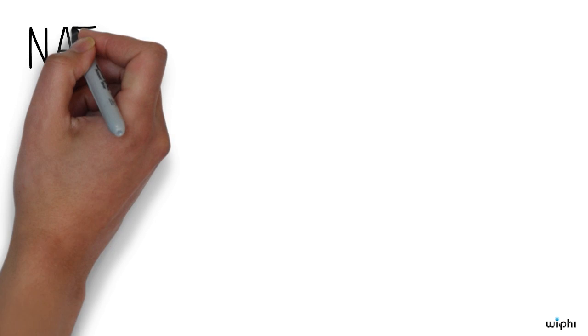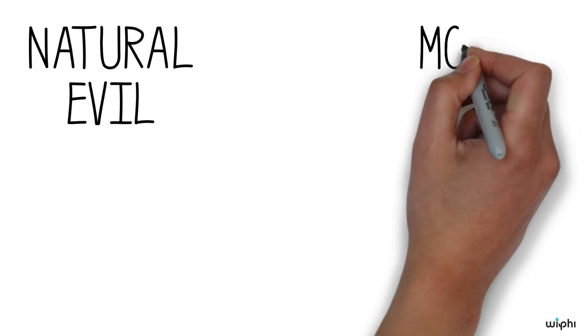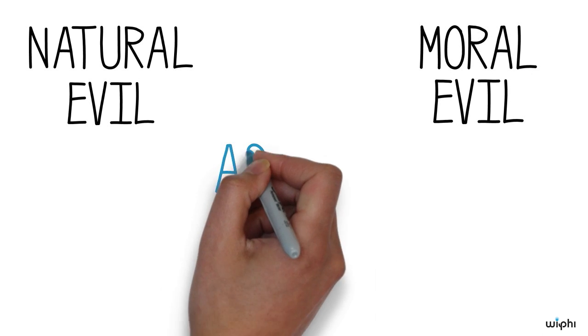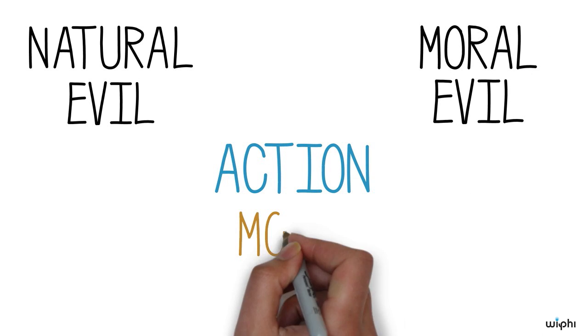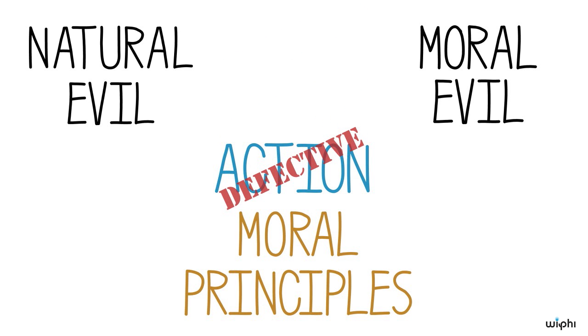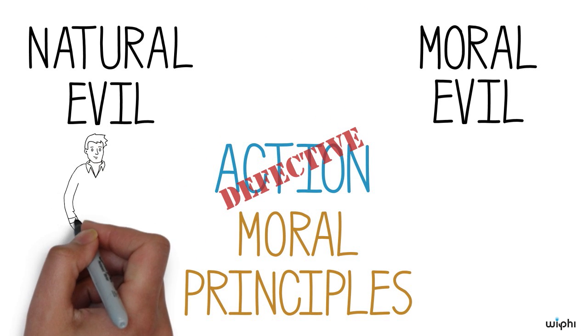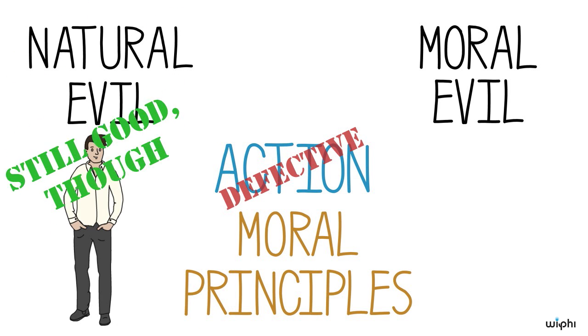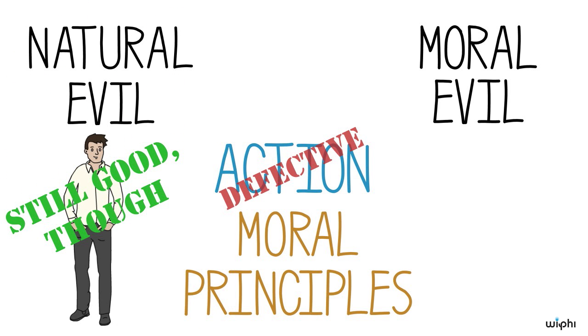Blindness is an example of natural evil. Moral evil, by contrast, is a lack of conformity of human action with moral principles. Such an action is defective. Yet the moral agent and his or her action, insofar as they exist, are good, even if they are defective.